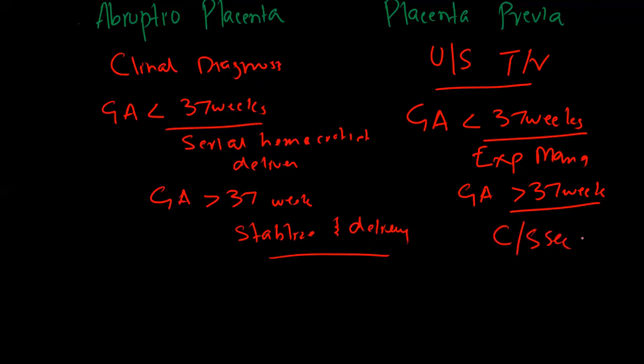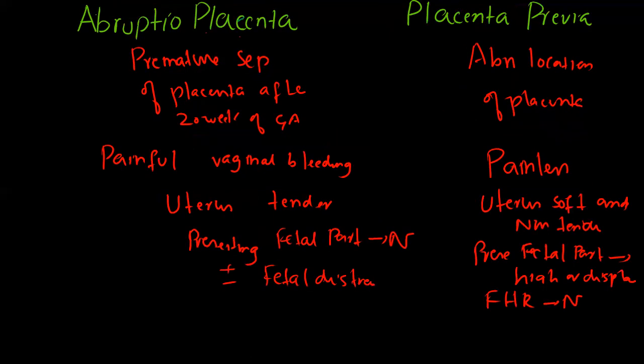So this is how you differentiate between these two conditions. To recap quickly: abruptio placenta is the premature separation of the placenta after the 20th week of gestation.